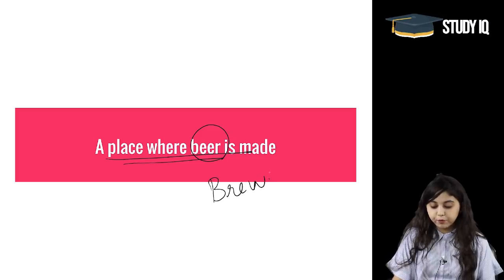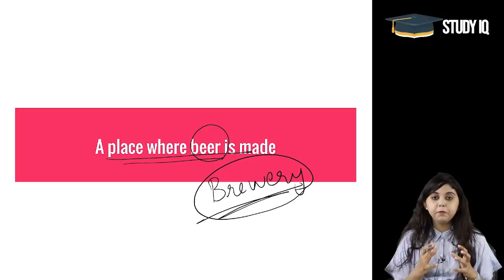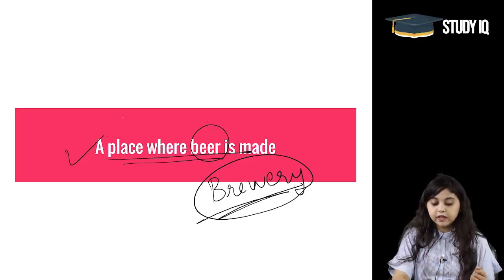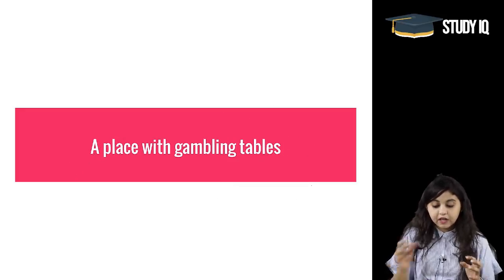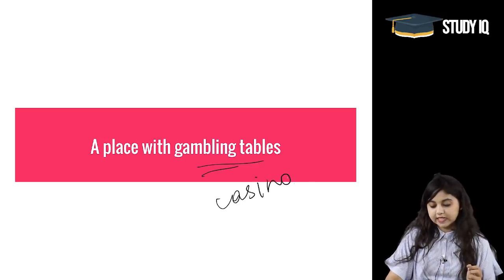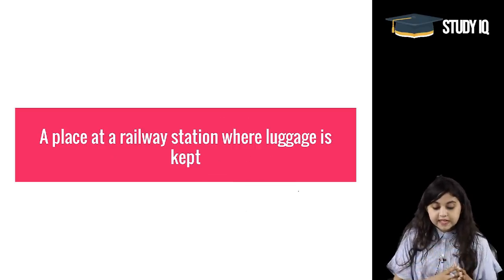A place where beer is made is called a 'brewery.' A brewery is where the entire production of beer takes place. A place with gambling tables is called a 'casino.'